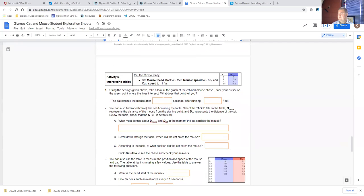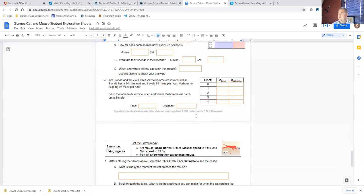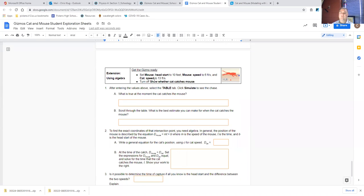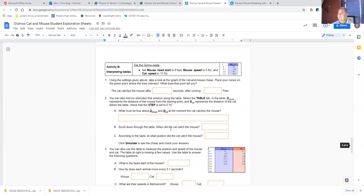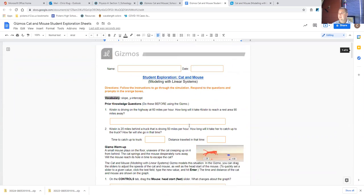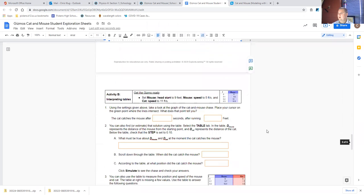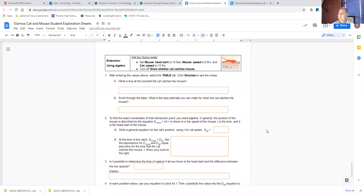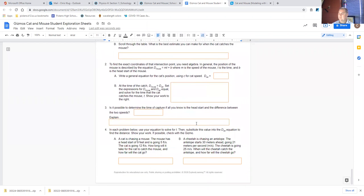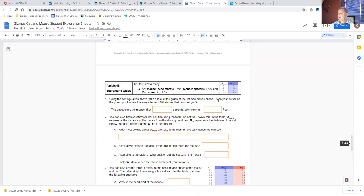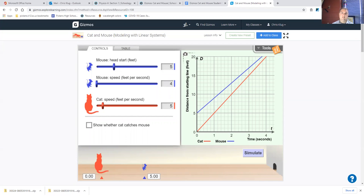When you get through activity A and activity B, you can stop and come back to the assignment to watch the second video where we will work through this extension. I'm also going to show you in my own notes at the end of the extension that we'll go back to the prior knowledge question here with Kristen driving, trying to catch the truck. And we can analyze that situation and find an answer. So I hope this is helpful. Please let me know if you have any questions.